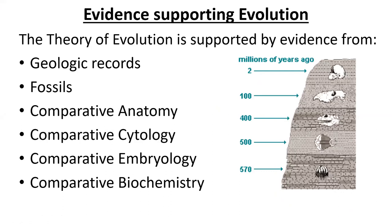This is a list of just some examples of evidence we have of evolution. We have geologic records — the earth's timeline and how long rock layers have been around. We can do carbon dating to determine that. We have fossils — remnants of organisms that lived long ago, and we can date them and figure out how old they are thanks to biochemistry. We have the ability to compare anatomy, meaning their structures, their bones, their cytology, their cell components, and their embryology.